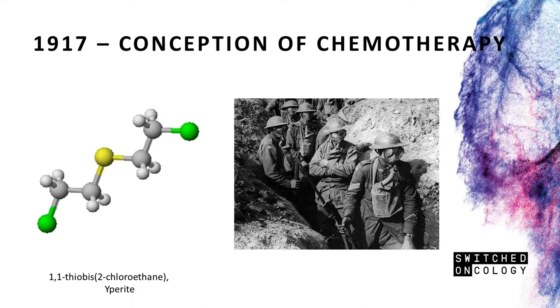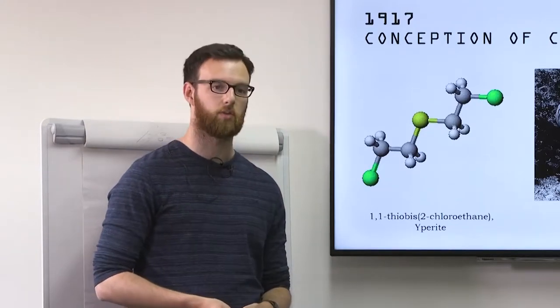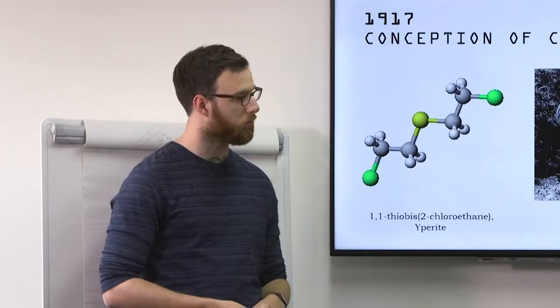I said it started in 1918, I told you a lie, it starts at the end of 1917. So interestingly, this is the molecular structure of 1-1-thiobis-2-chloroethane, also known as yperite, because one of the first applications of mustard gas was at Ypres in World War I in Belgium.